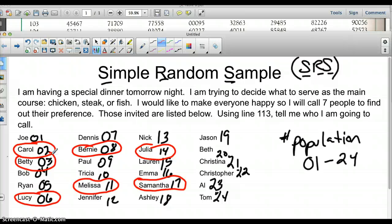So 14 and Betty for number three. I'm going to call Carol, Betty, Lucy, Bernie, Melissa, Julia, and Samantha and ask them which one they would prefer for dinner. I should be able to use that to determine which meal I should give—chicken, steak, or fish—because I could go with the majority of that and figure that's a good enough amount to estimate. So that's how you do a simple random sample.